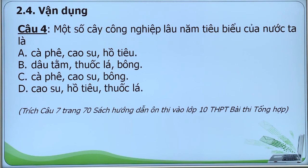Câu 4: Một số cây công nghiệp lâu năm tiêu biểu của nước ta là: A. Cà phê, cao su, hồ tiêu; B. Dâu tằm, thuốc lá, bông; C. Cà phê, cao su, bông; D. Cao su, hồ tiêu, thuốc lá. Từ những kiến thức chúng ta đã ôn tập, có thể thấy ngay đáp án của câu này là A: cà phê, cao su và hồ tiêu.